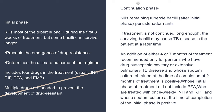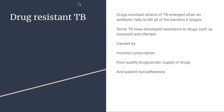The continuation phase targets the persisters and dormants. Because tuberculosis is a slow-growing bacteria, if treatment is not continued long enough, surviving bacilli may cause TB disease later when the patient is immunocompromised. Due to incorrect prescriptions, poor-quality drugs, and most importantly patient non-adherence, several strains of tuberculosis have developed resistance to first-line drugs such as isoniazid and rifampicin.